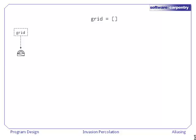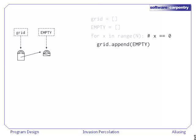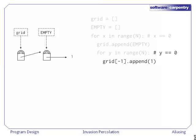Let's trace the execution of this program. We start by assigning an empty list to the variable grid, then assign another empty list to the variable empty. In the first pass through our loop, we append the empty list pointed to by empty to the list pointed to by grid. We then go into our inner loop and append a 1 to that sublist, then another 1 and another 1.